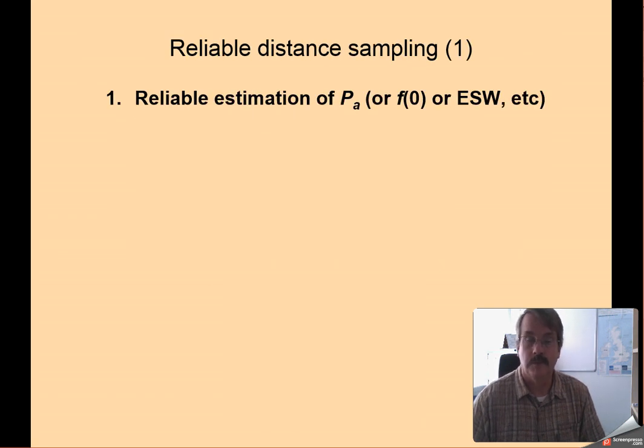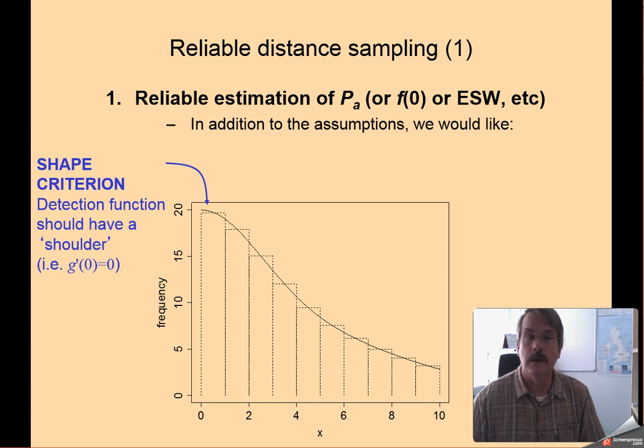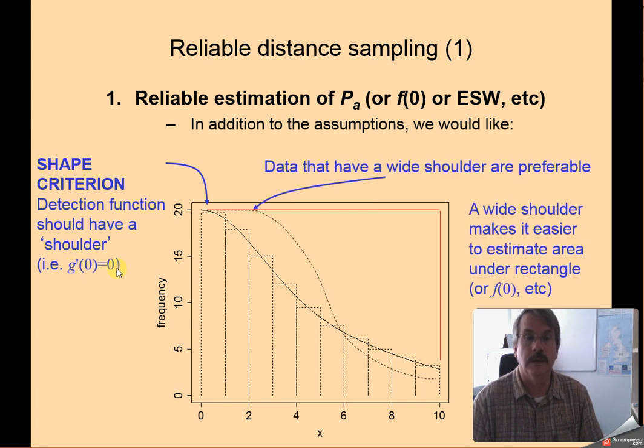Reliable estimation of p sub a that we described in our first lecture or any of its derived quantities requires, well, benefits from, notice these aren't assumptions, but these are things that would enhance our estimation work. If we have a detection function that falls off very, very slowly at small distances away from the point or transect. So the mathematical way of saying this is that we have a shape criteria in which the detection function possesses a shoulder. The mathematical way of defining a shoulder is that that derivative at 0 is 0. In other words, this detection function does not drop off at all for some distance before it begins to fade.